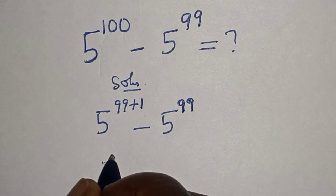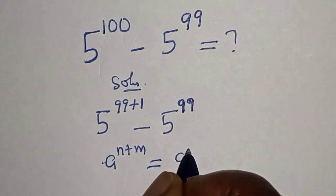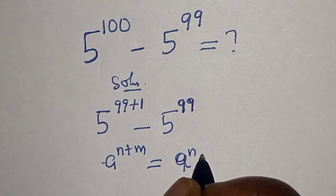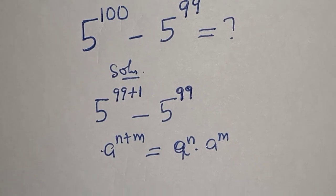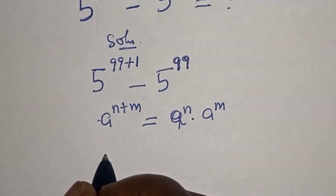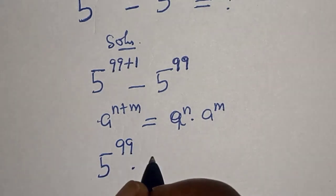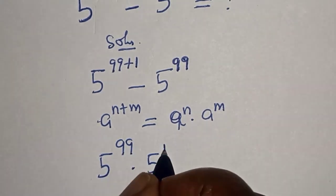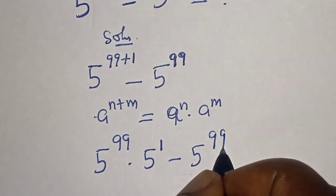If you have a raised to power n plus m, this is equal to a raised to power n multiplied by a raised to power m. And this is 5 raised to power 99 multiplied by 5 raised to power 1 minus 5 to the power of 99.